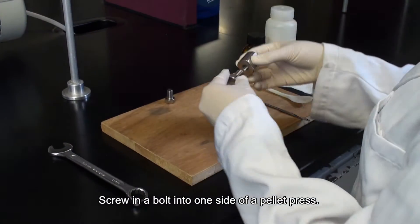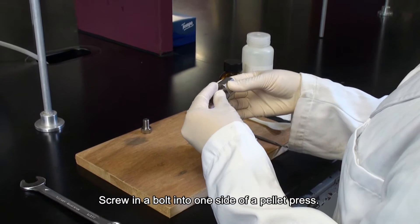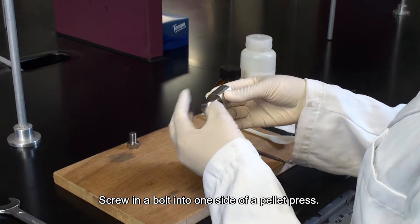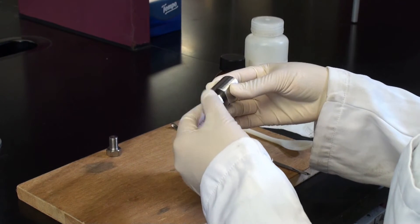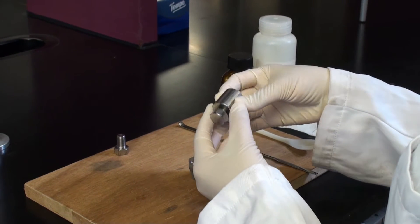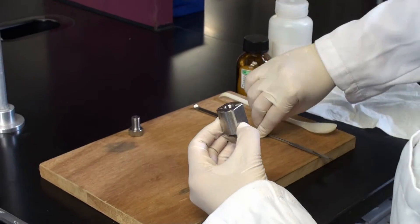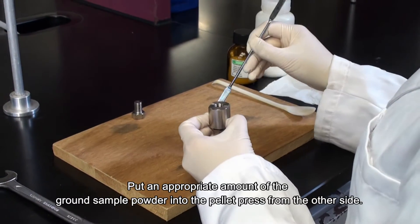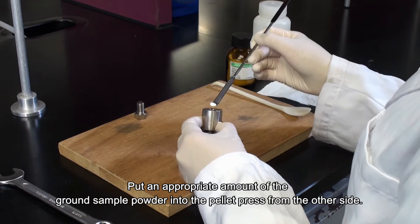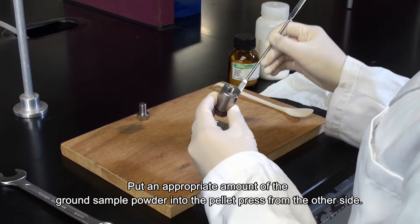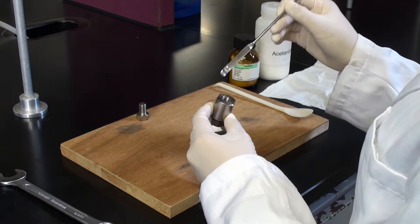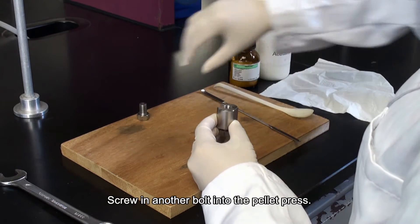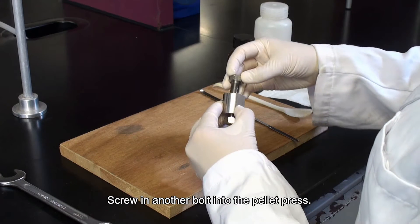Screw in a bolt into one side of a pellet press. Put an appropriate amount of the ground sample powder into the pellet press from the other side. Screw in another bolt into the pellet press.